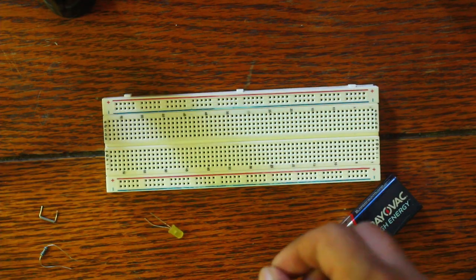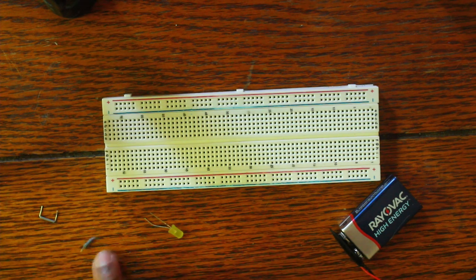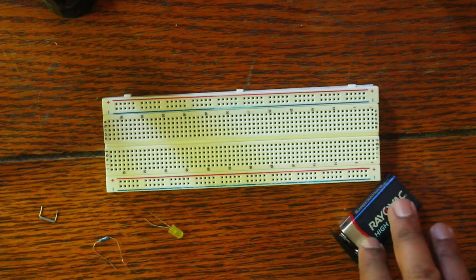All right, so I've taken out all the components we got here. We got an LED, we got a resistor, we got a little jumper, we got a nine volt battery.